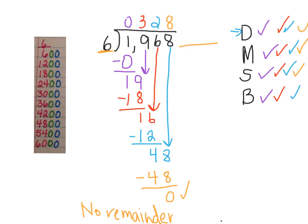I'm going to take my quotient, 328, multiply it times my divisor, 6, and I should get the dividend that I started with. 6 times 8 is 48. 4 goes up, 8 goes down. 2 times 6 is 12, plus 4 is 16. 1 goes up, 6 goes down. 3 times 6 is 18, plus 1 is 19.